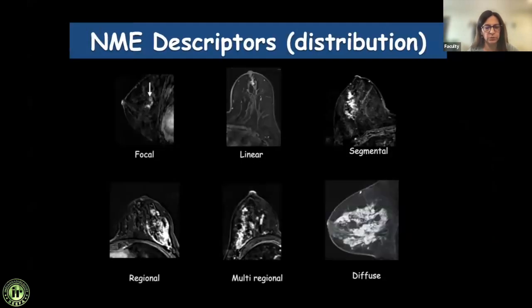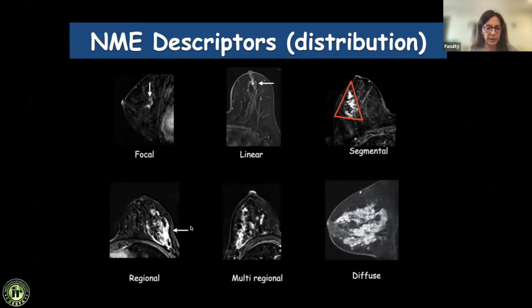Non-mass enhancement is divided according to distribution: focal means occupying less than a segment; linear is self-explanatory and can have a branching pattern indicating ductal enhancement; segmental is a triangular shape with the apex pointing towards the nipple, representing a TDLU; regional occupies a larger area than a segment; multi-regional has normal breast tissue in between; and diffuse involves a large part of the breast. Linear and segmental are pointers towards malignancy.